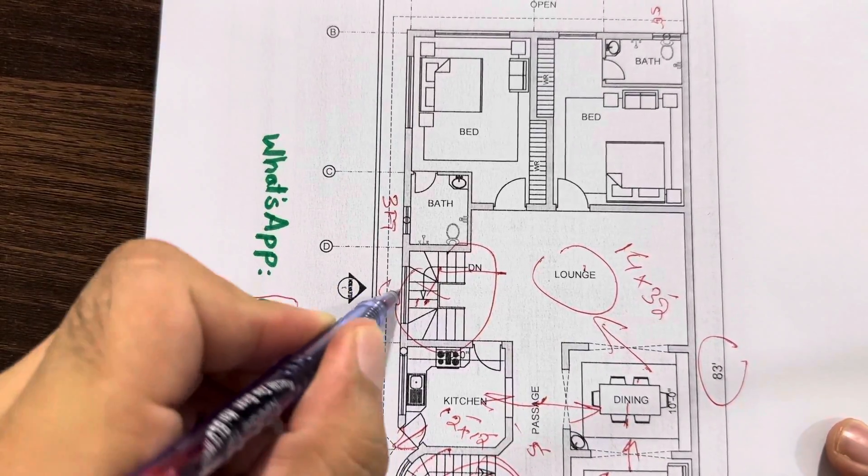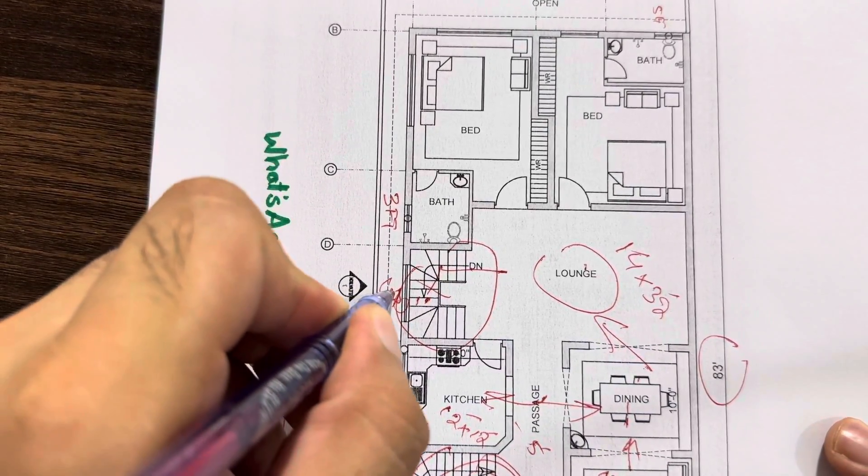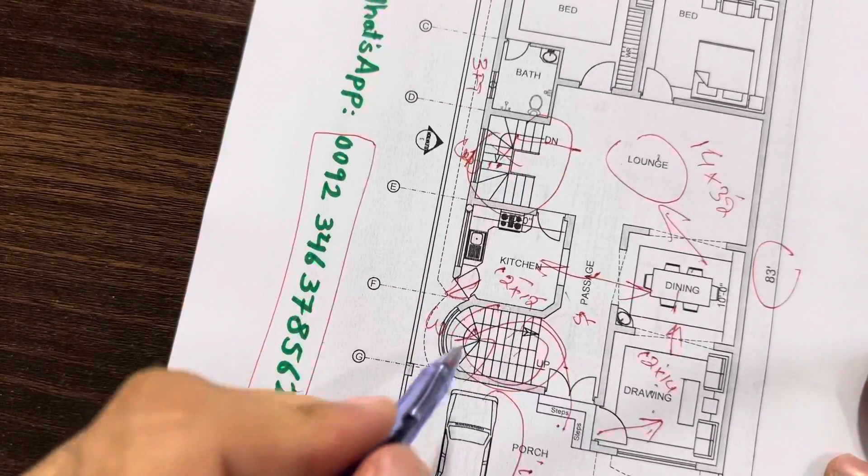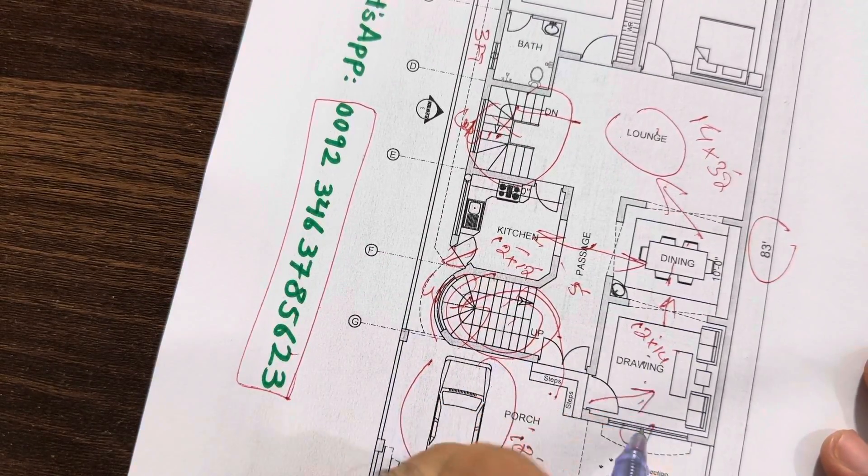Next, you can see this is proper ventilation. You can see clearly here. And this is a window for this, and this is the window for this drawing room.